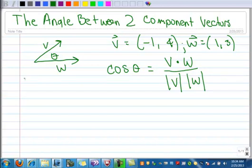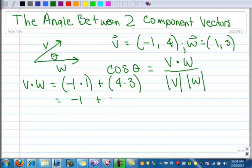Let's first calculate the dot product. We multiply the two x components together and the two y components together. When we do that, we end up with negative one and 12. Added together is 11. Let me box that so we don't lose that. So the dot product is 11.